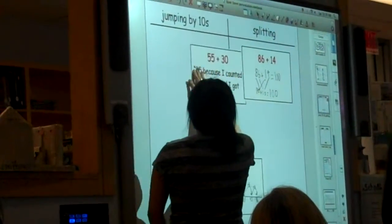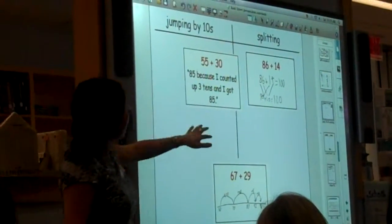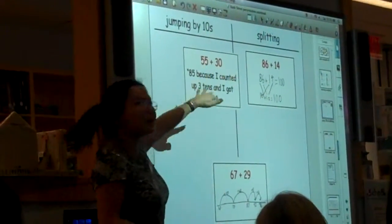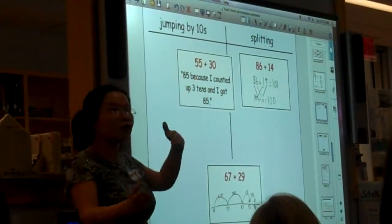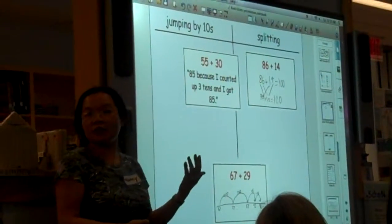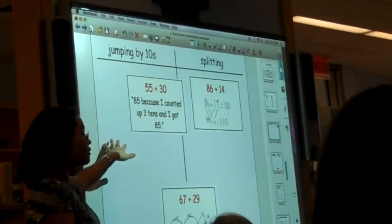And then they look at this. And sometimes I set that up with just words or sentences. And this I got from their number string. So this is actually kids' language. Eighty-five because I counted up three tens and I got eighty-five. So now they have to argue and reason with each other as to which strategy is being used here. And they have to really think about that and what is the evidence of that.